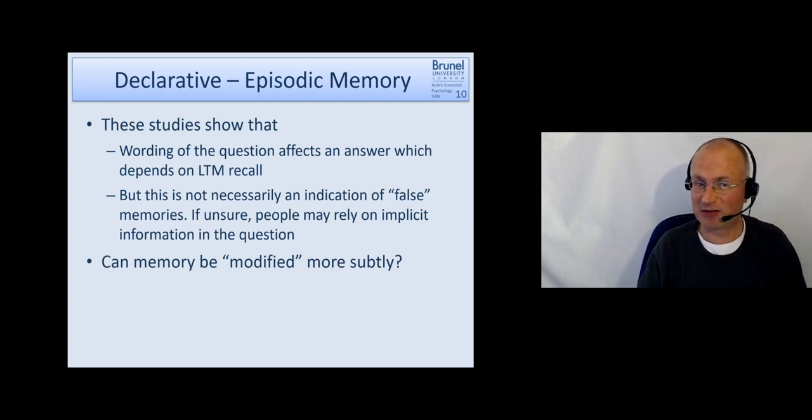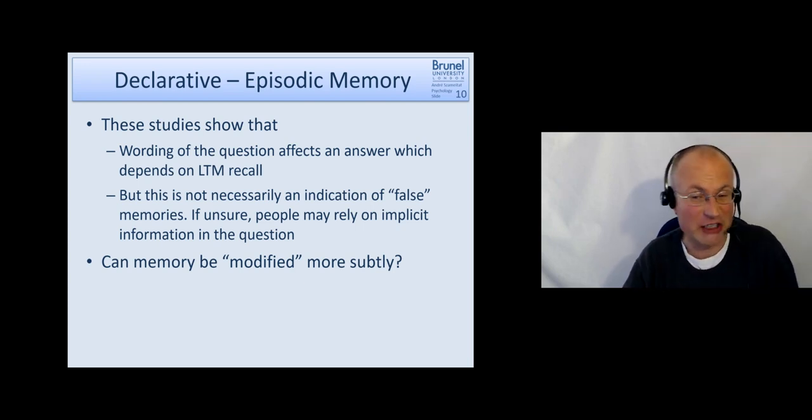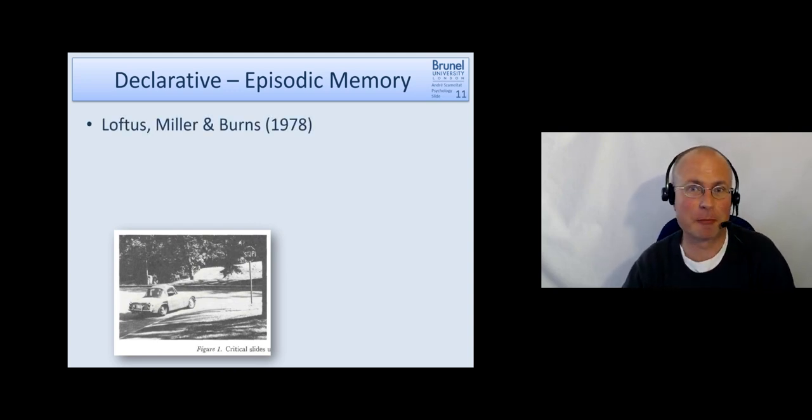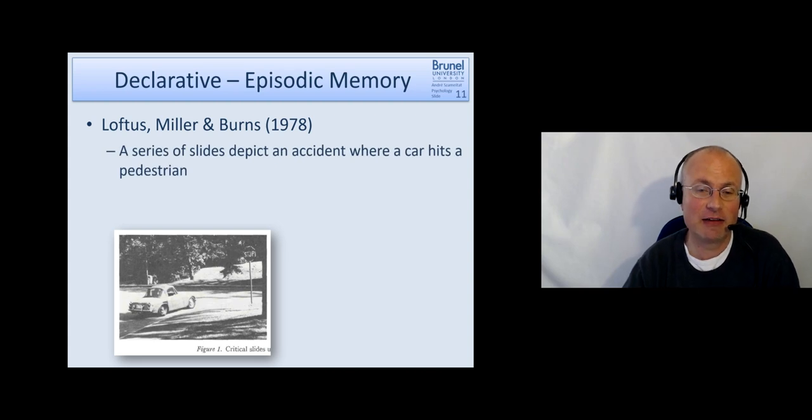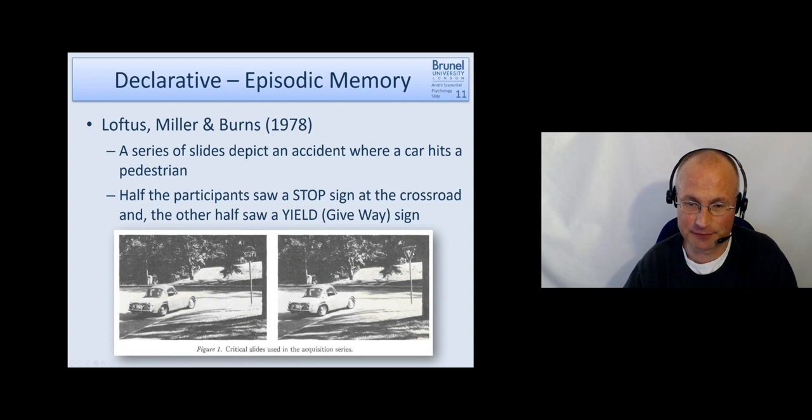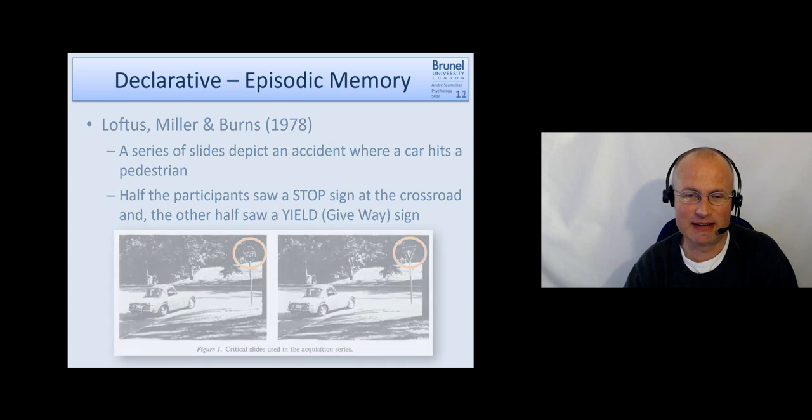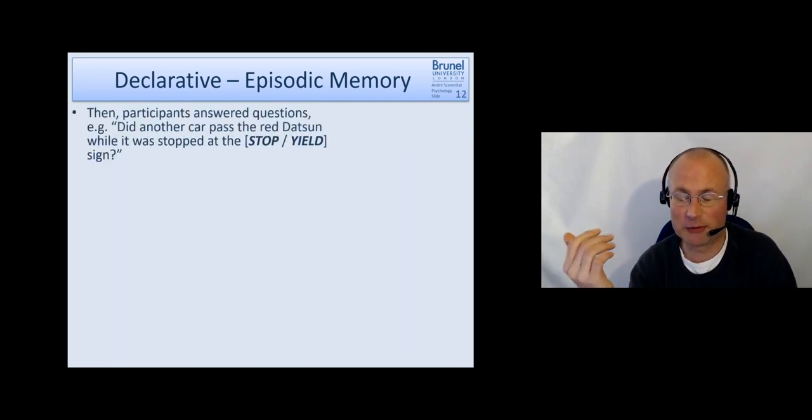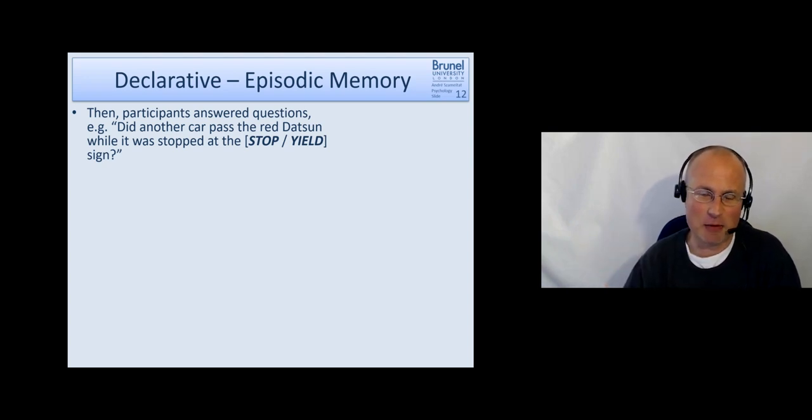Loftus and her group then asked, can we maybe modify memory even more subtly? They did a very nice study on that which I would like to present here. It was a series of slides which depicted an accident where this car here hit a pedestrian. What they did was that half of the participants saw a stop sign here at the crossroad and the other half saw a yield sign. Then they asked participants questions and they manipulated information very implicitly which wasn't necessary to answer the question.